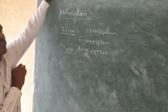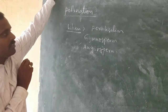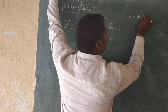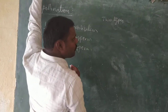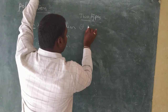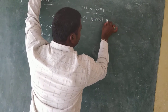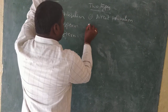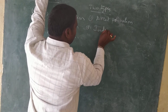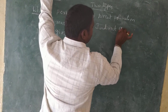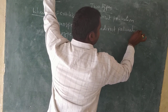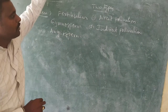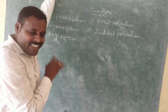How many types of pollination are there? There are two types of pollination: the first one is direct pollination, and the second one is indirect pollination.